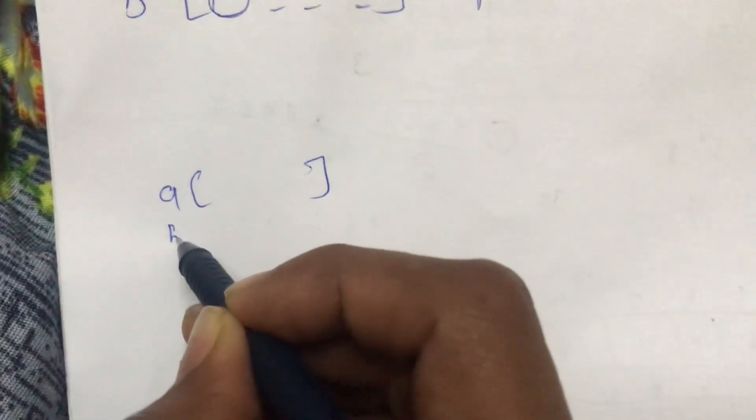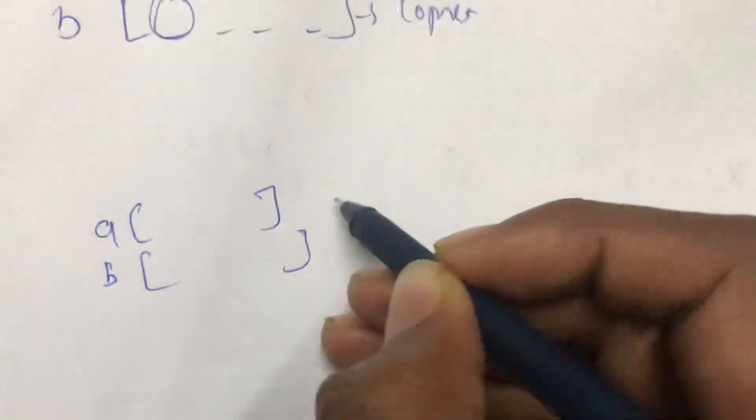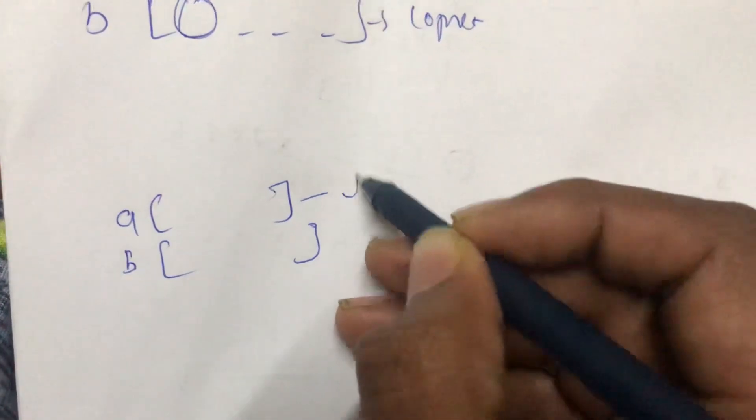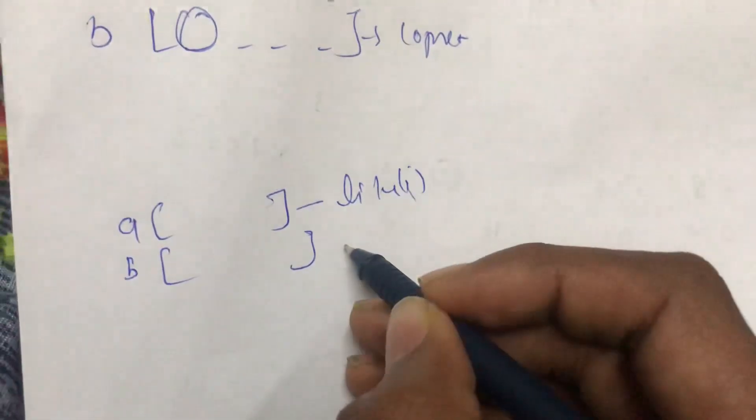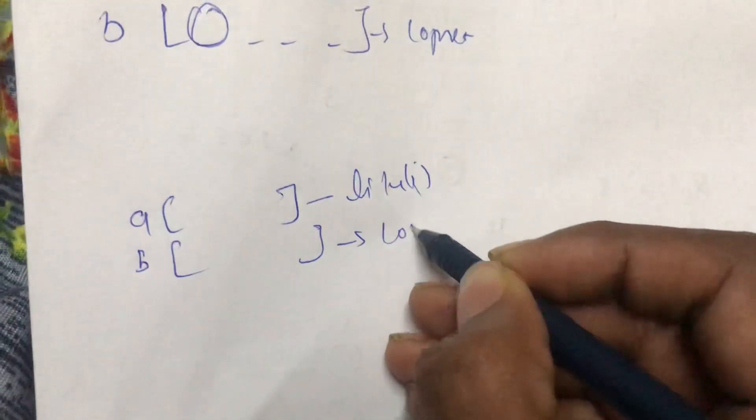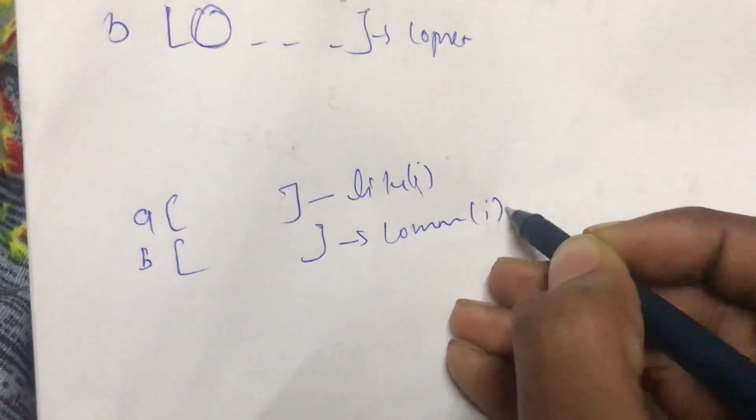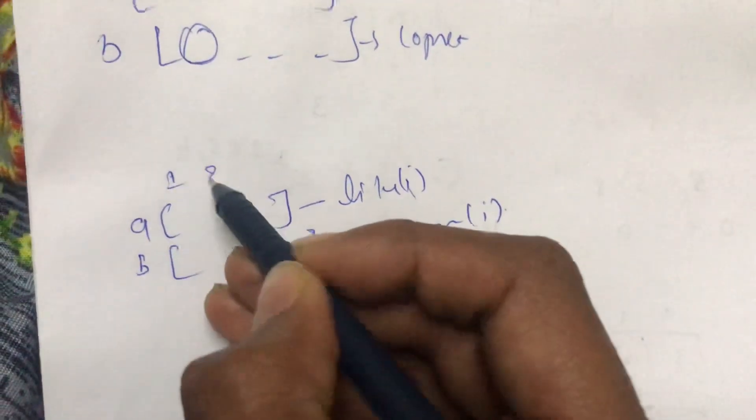Let me explain this question to you. Let's suppose we have given two arrays, one is A and the second is B. This array shows the number of likes on the ith post, and this array shows the number of comments on the ith post.